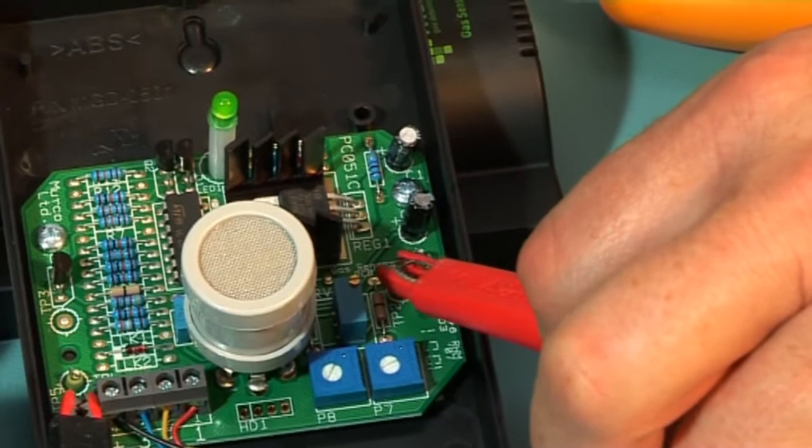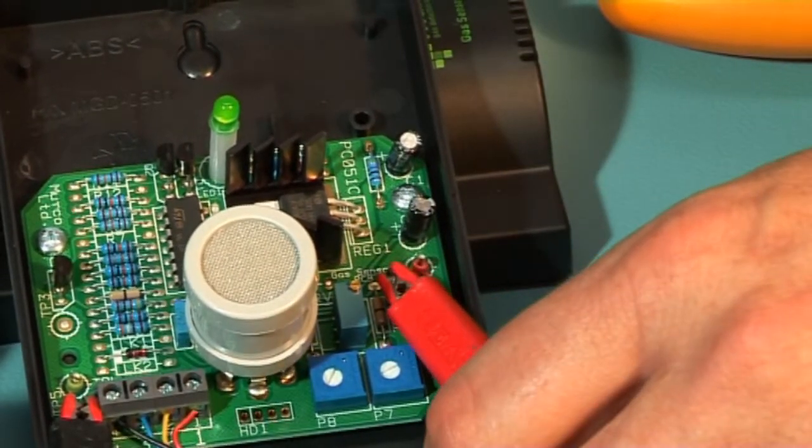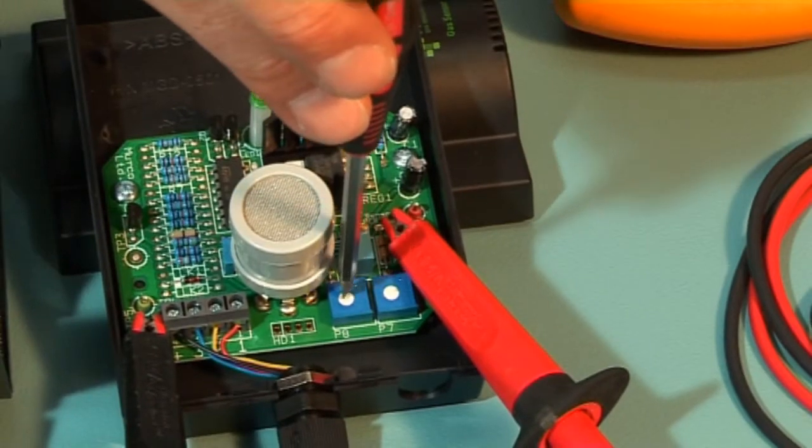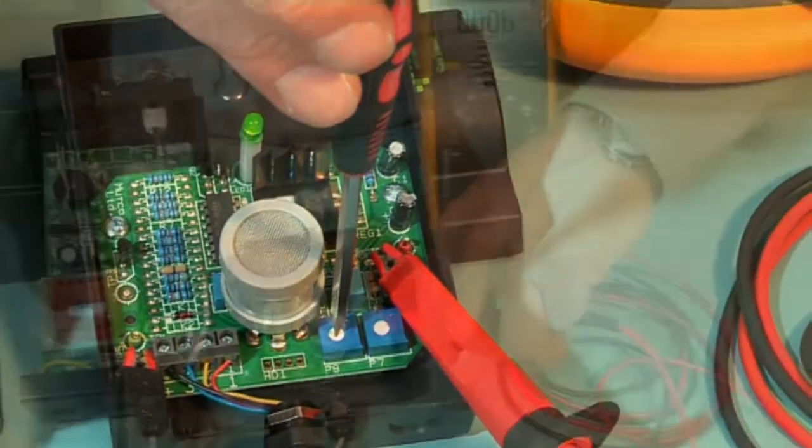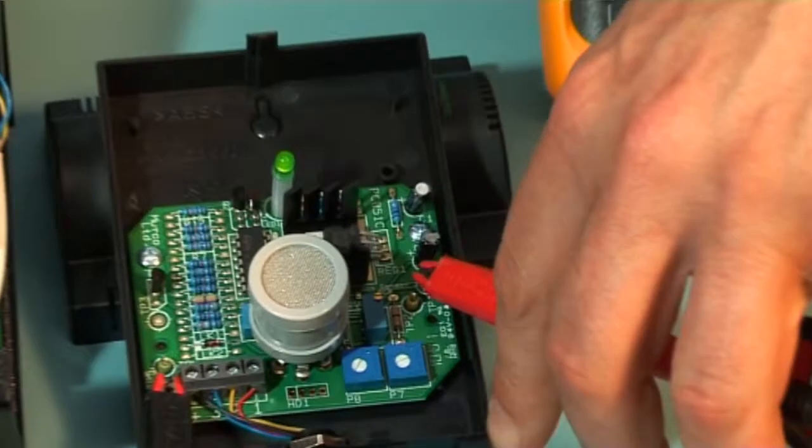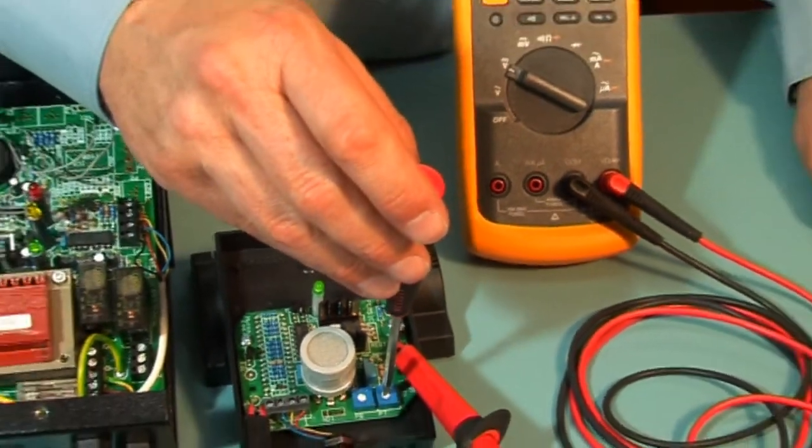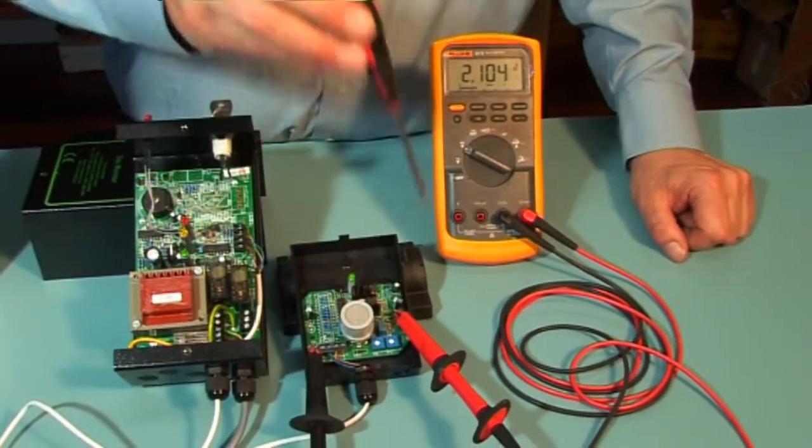Move the positive lead from TP5 to TP2 and adjust P8 for the low level as shown on the rating label. Then move the positive lead from TP2 to TP1 and adjust P7 for the high level as shown on the rating label.